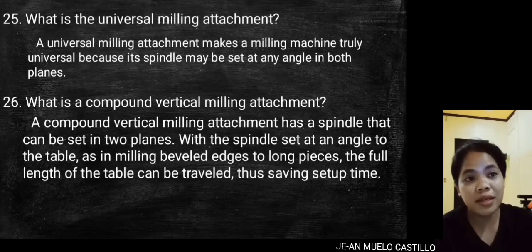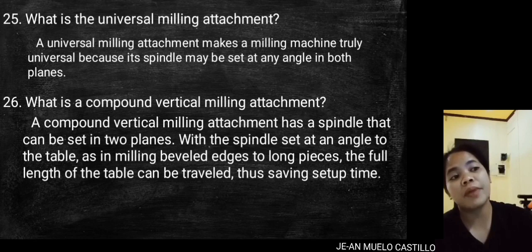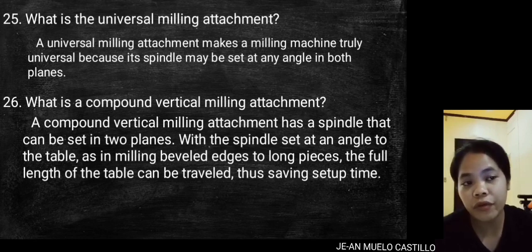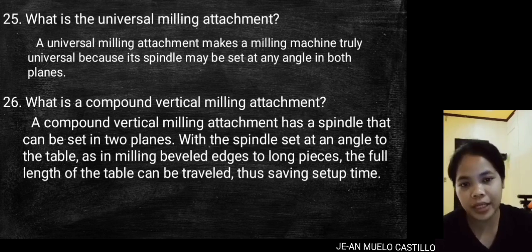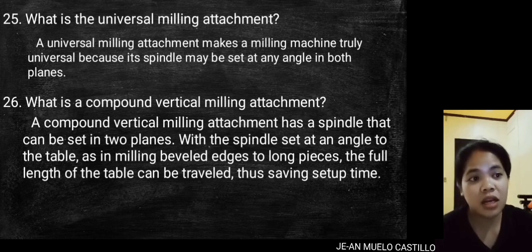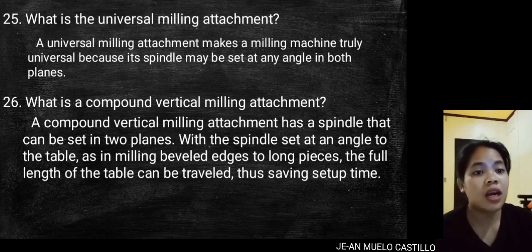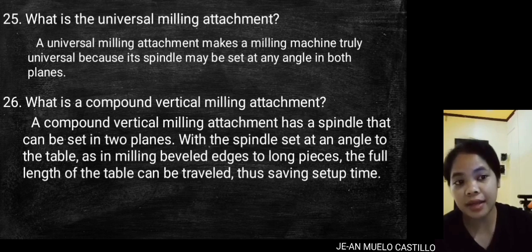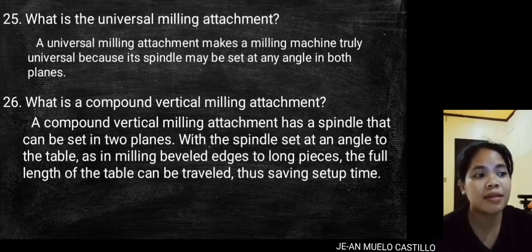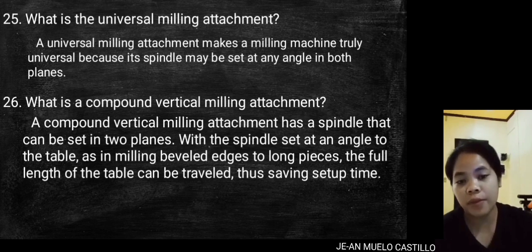What is the universal milling attachment? A universal milling attachment makes a milling machine truly universal because its spindle may be set at any angle in both planes. What is a compound vertical milling attachment? A compound vertical milling attachment has a spindle that can be set in two planes, with the spindle set at an angle to the table.